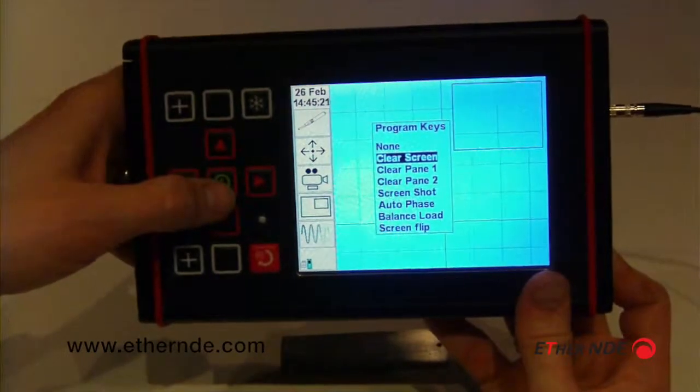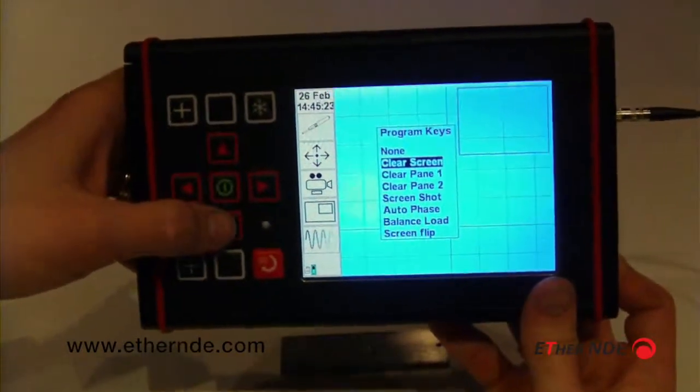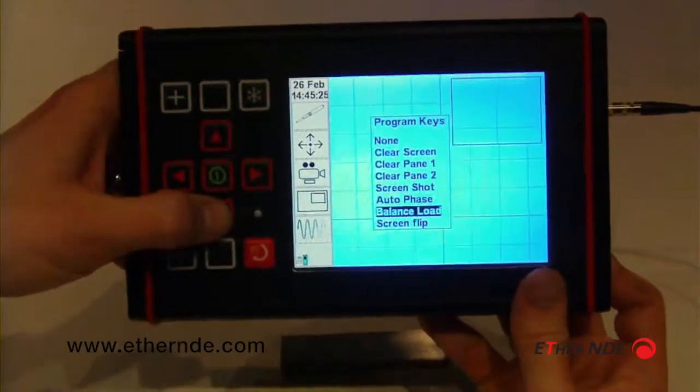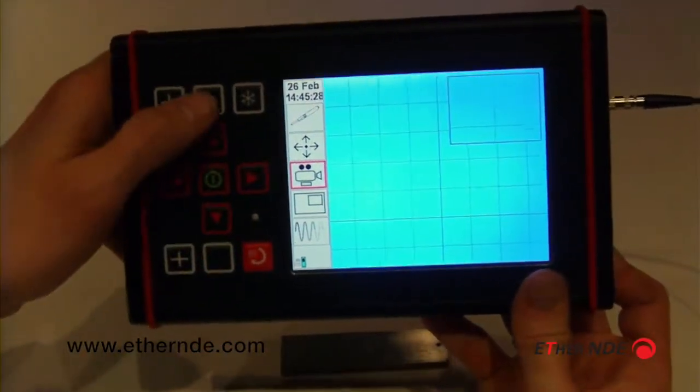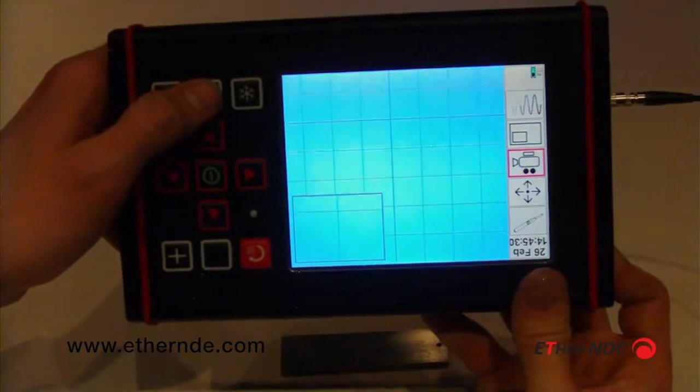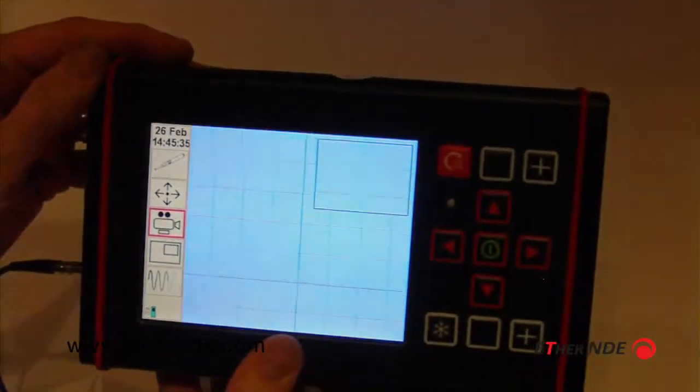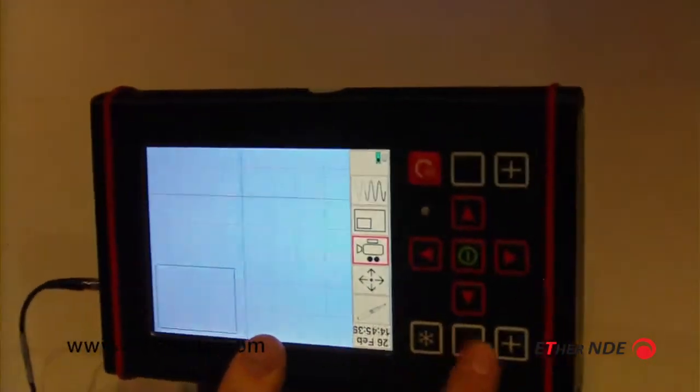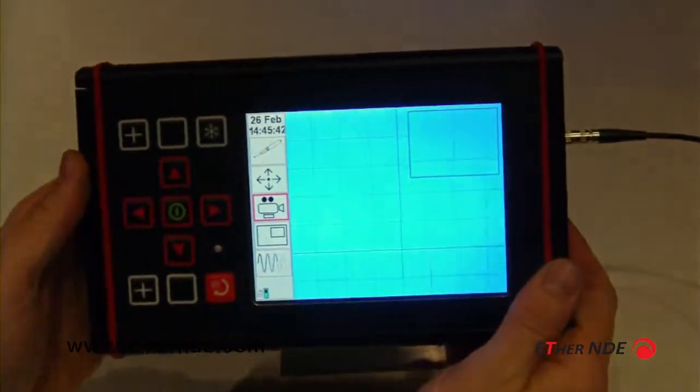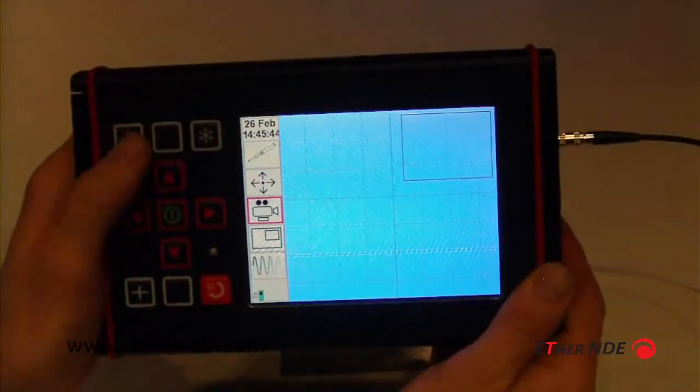So we'll start off with a simple one. We held the key down to bring up the menu, so one option is screen flip. OK to set that. Now pressing on this top blank key flips the screen upside down to be used by a left-handed person. If I push the same blank key again, now back to right-handed. So that's a very simple one.